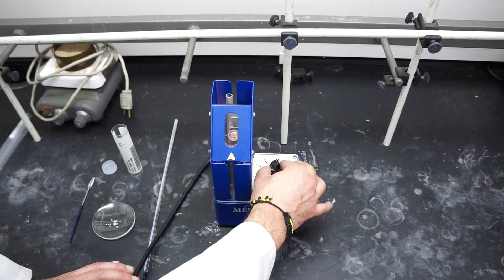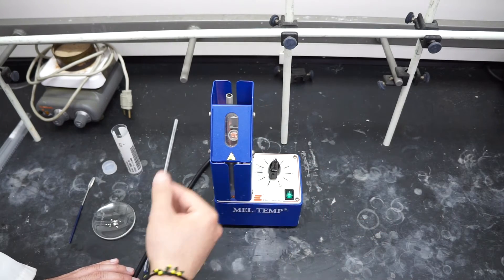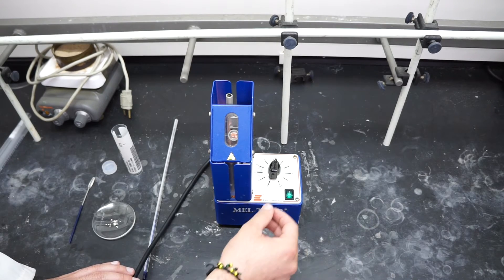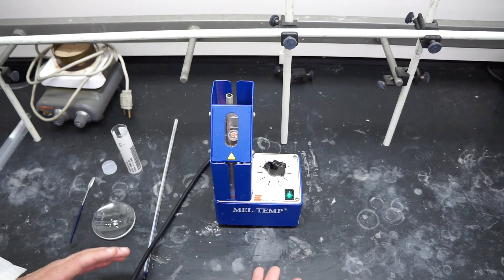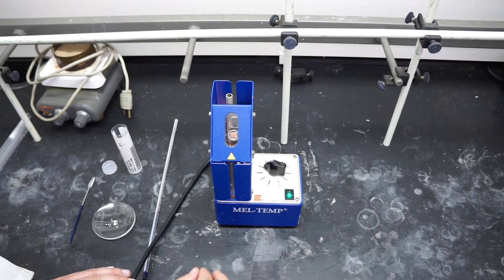Usually, you can start off at about a 5 or a 6 just at the beginning to get it within about 30 degrees of your sample's melting temperature. And then you're going to lower it down to, say, like a 3, maybe a 4. And then you want to heat it about 2 or 3 degrees Celsius per minute as you approach the expected melting temperature.